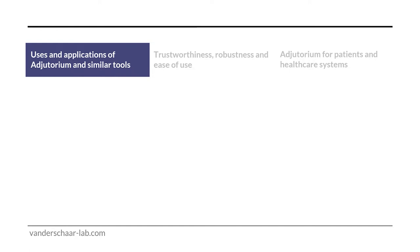The roundtable has three broad topics, each containing a number of questions. Mihaela will ask the panelists these questions, kicking it to one or two panelists to get things started, then proceeding to the next question.